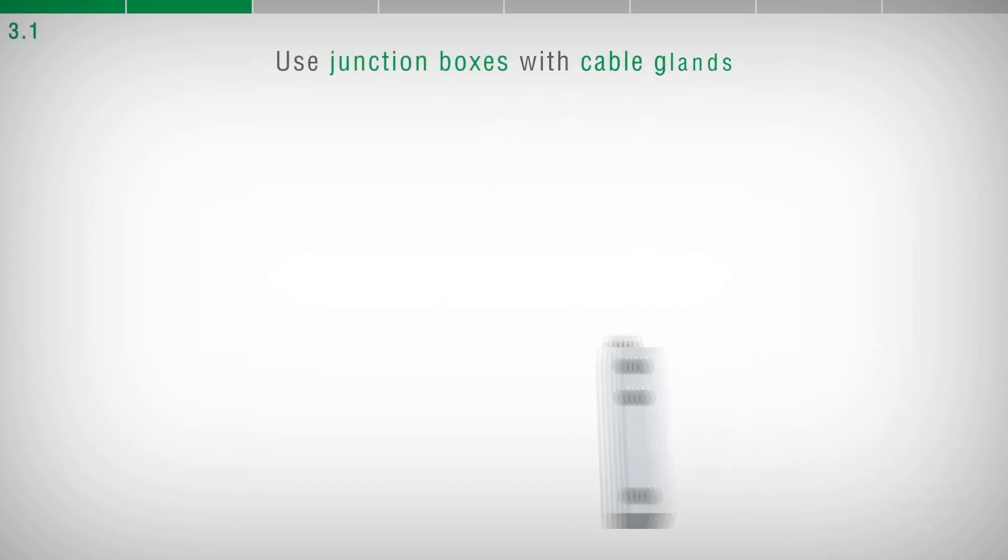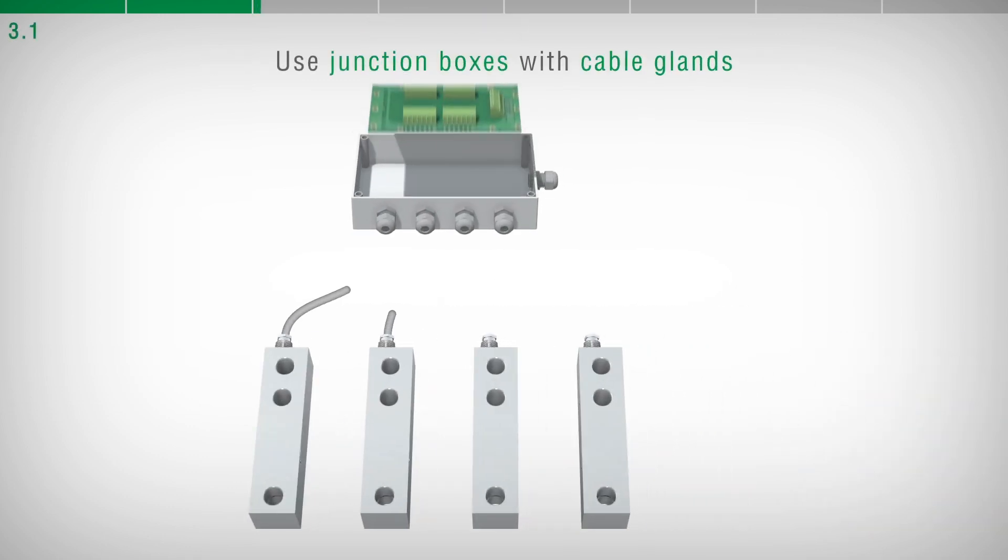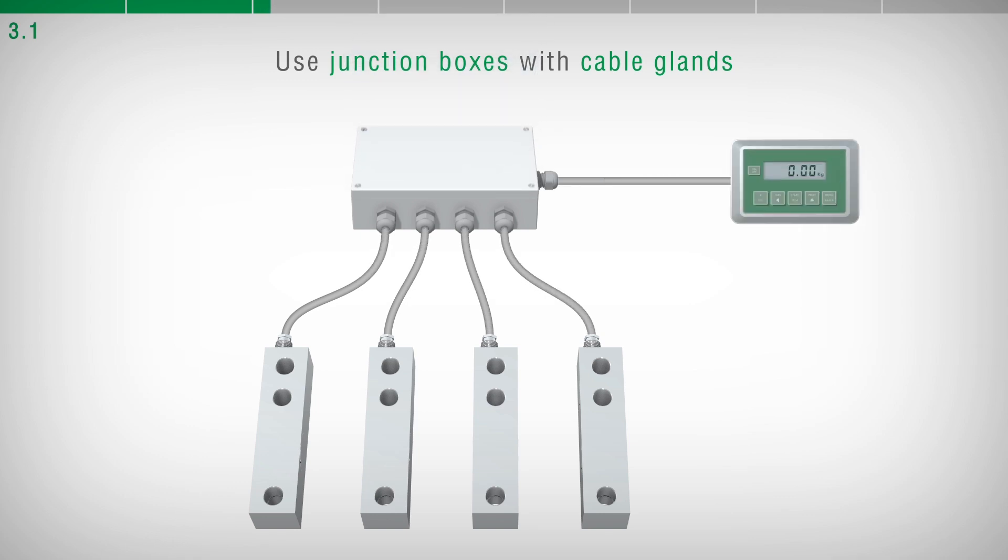To connect several load cells in parallel, use a waterproof junction box with a suitable terminal board or a multi-channel transmitter in a box.